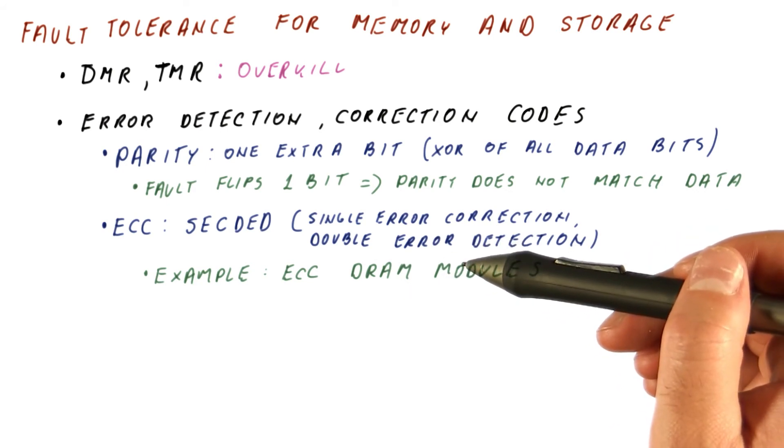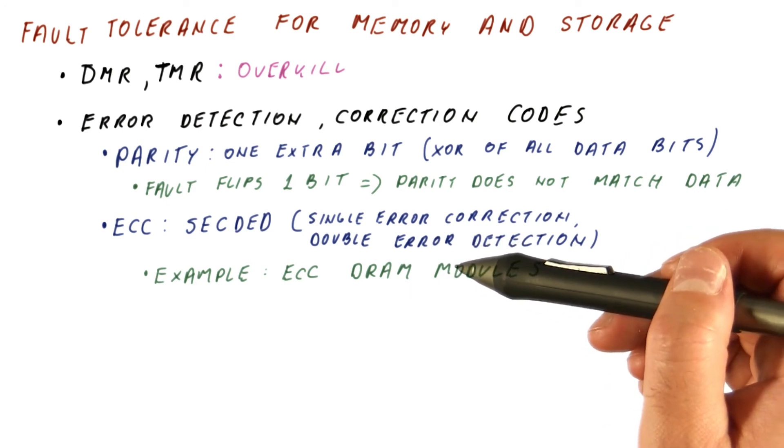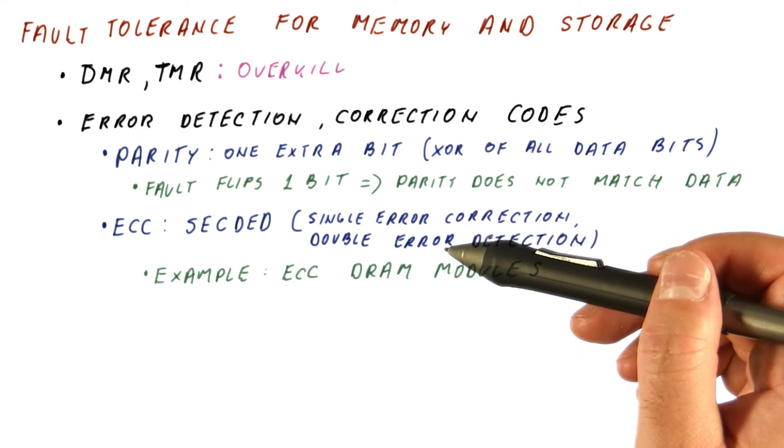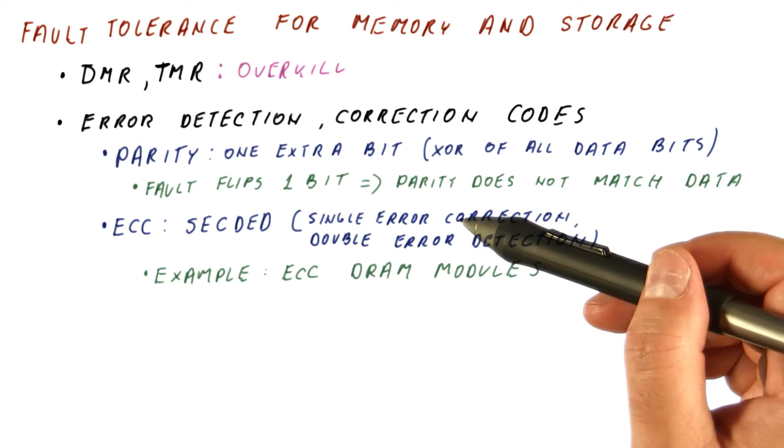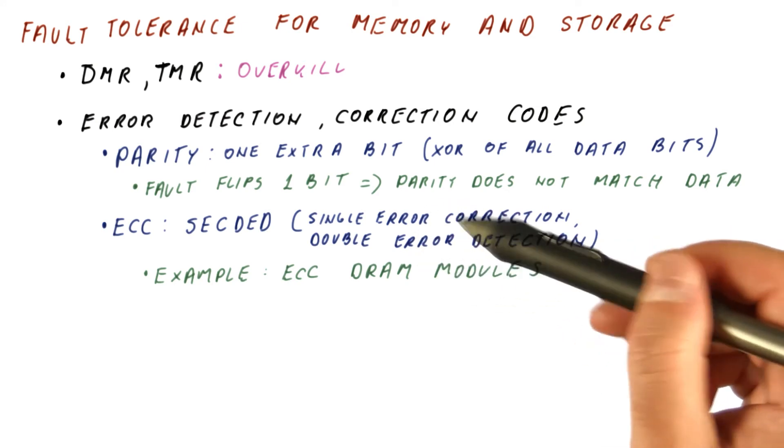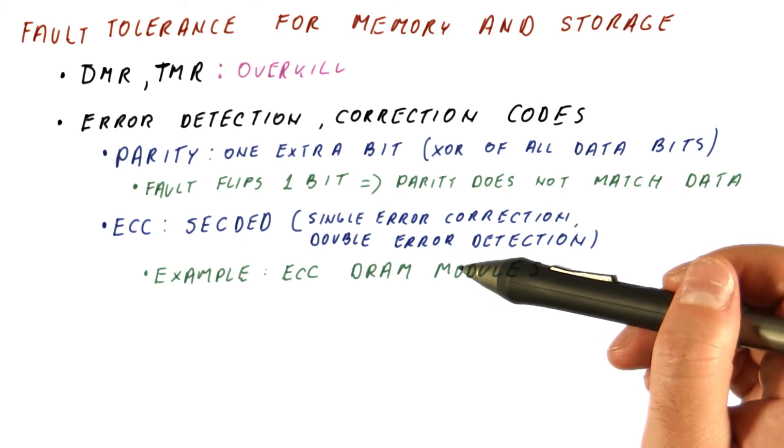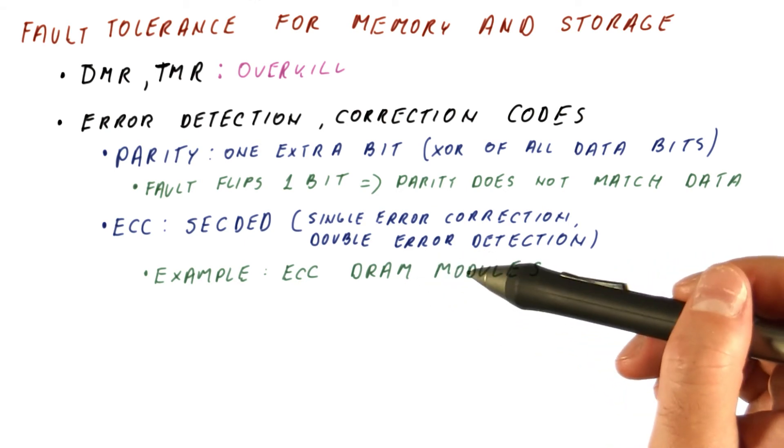If there is a single bit flip in such a module, you don't even notice—everything functions well. If there are two errors in the data protected by the same code, we will get notified that there's been an error, but we cannot continue operating normally because we cannot correct the erroneous state anymore.